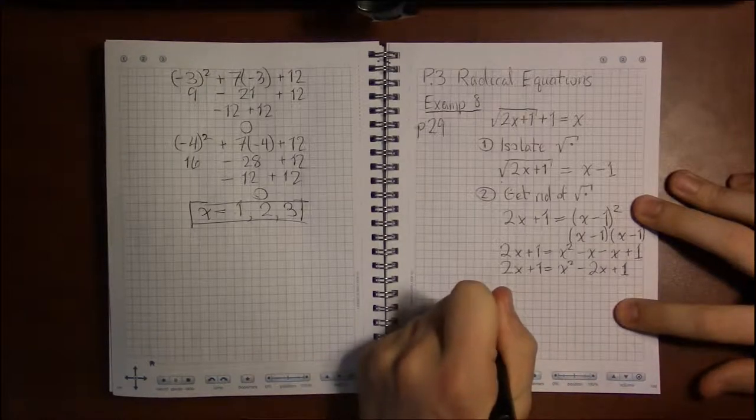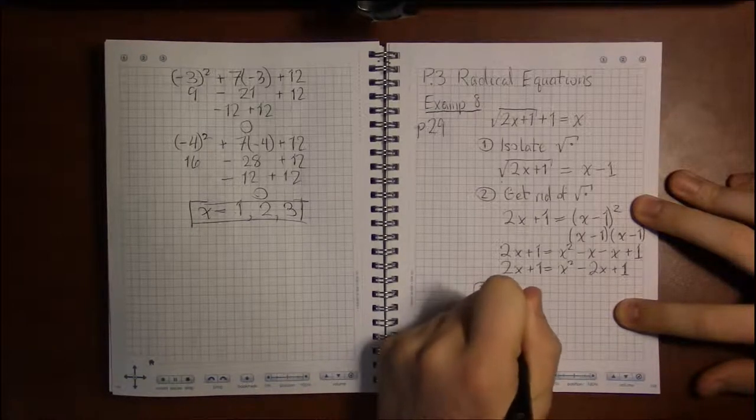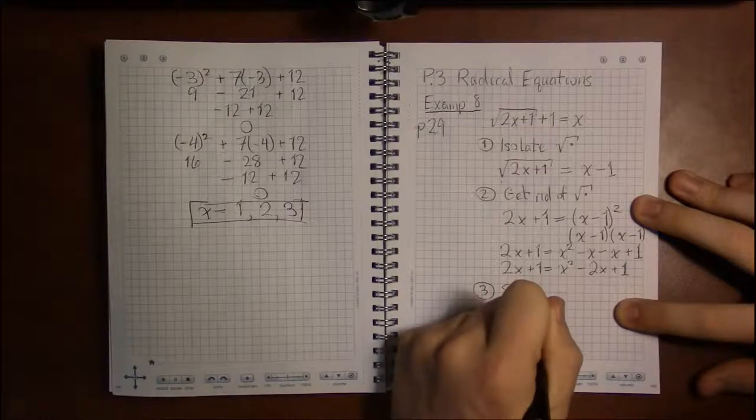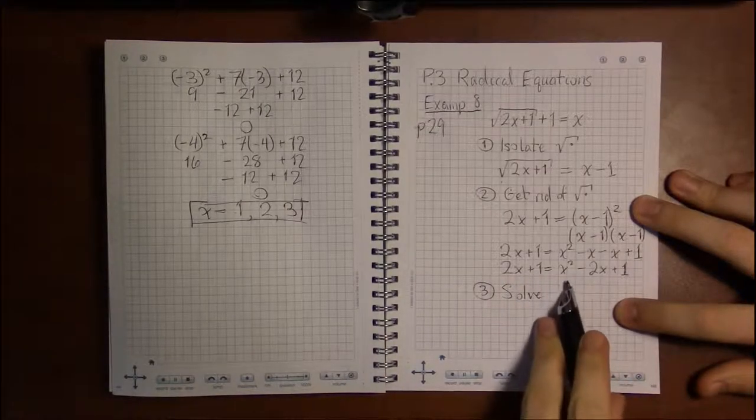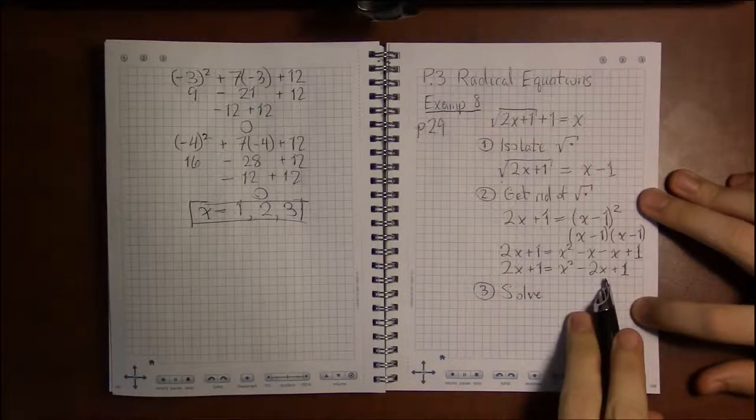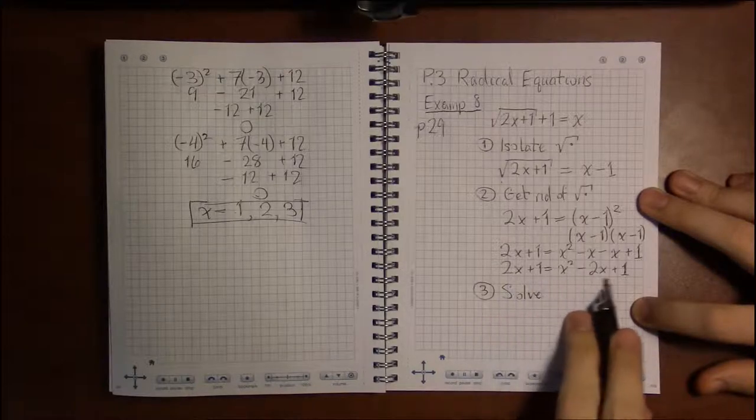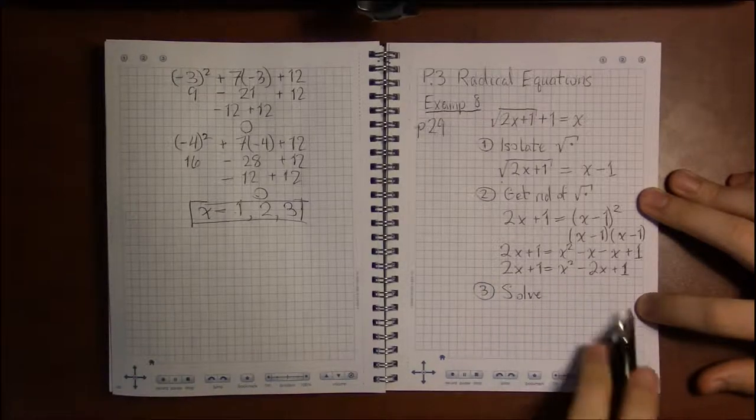And now, we just solve. And looking at this equation, I see x squareds, I see x's, and I see numbers. That's all that's here. So this is quadratic.